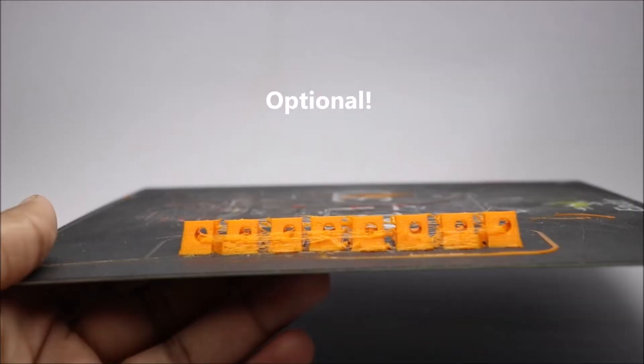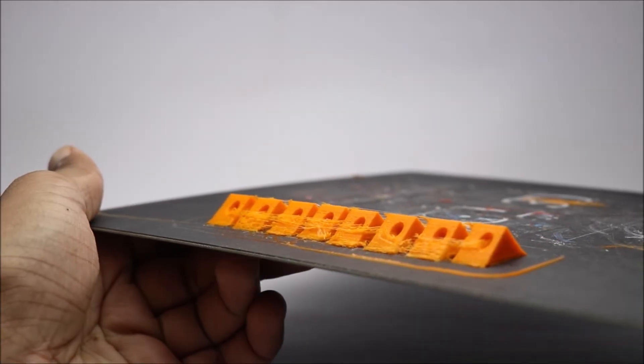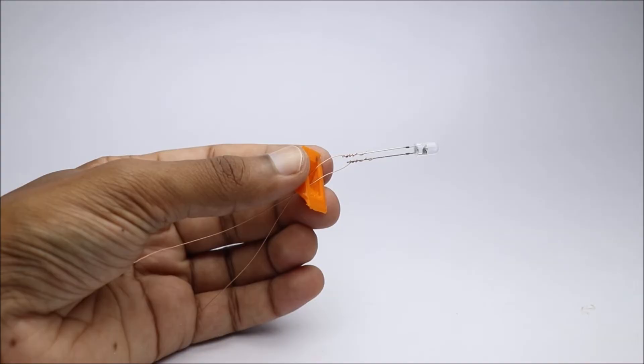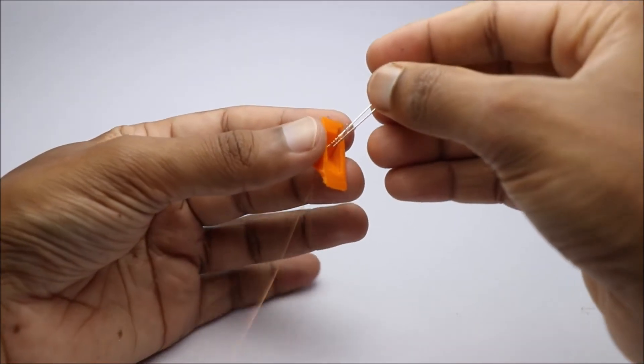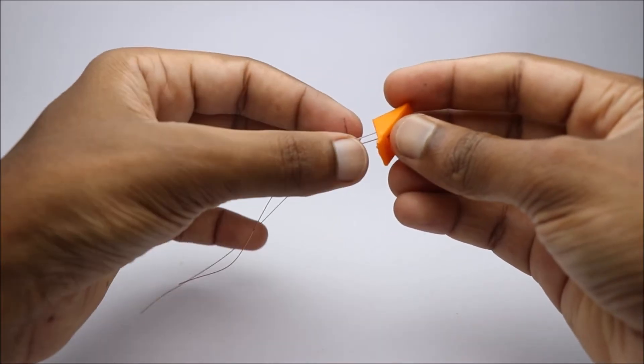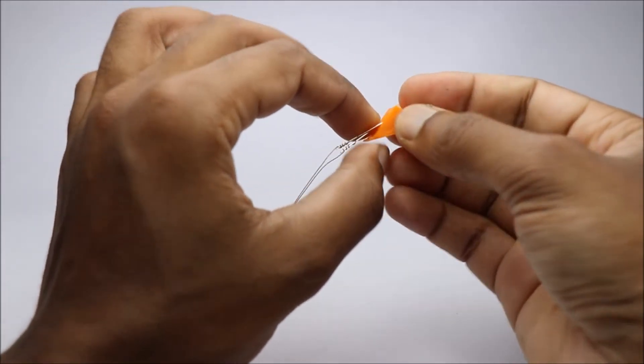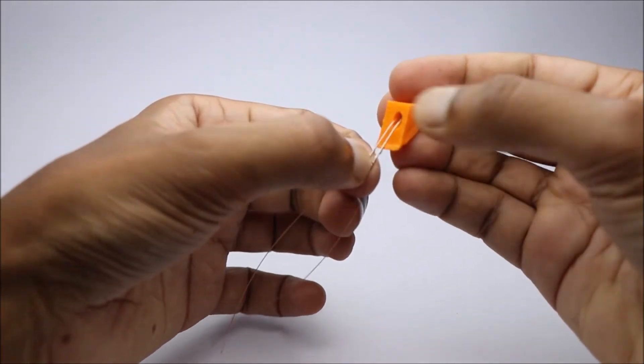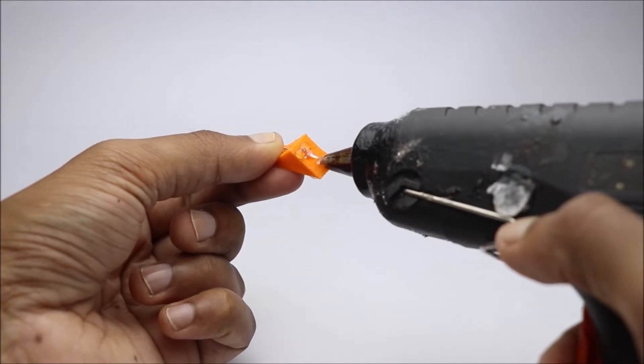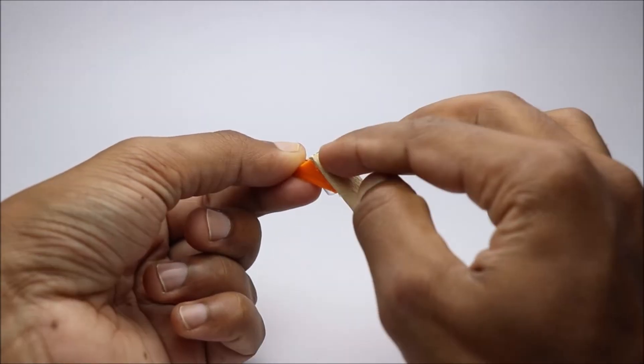For better finishing I use these 3D printed supports. Well this is an optional thing. You can also directly paste the LEDs to the sticks or straw. Make sure you're insulating all the terminals.